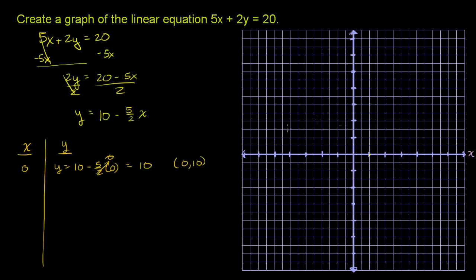When x is 0, y is 10. So x is 0, so it's going to be right here at the middle of the x-axis, and you go up 10 for the y-coordinate. 1, 2, 3, 4, 5, 6, 7, 8, 9, 10. So it's right over here. So that's the point 0 comma 10.